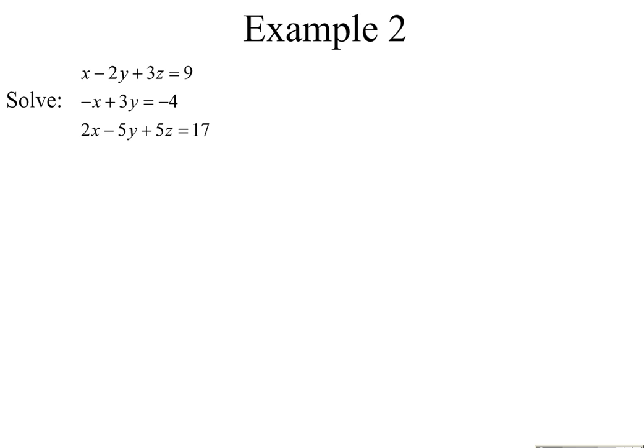Problem two. One of our three equations is already written in terms of only x and y. So what I need to do now is get a second equation in terms of only x and y. I'm going to take the top equation and the bottom equation, and combine them to eliminate z. To eliminate z's, I need to multiply the top equation by five. I'm going to get 5x minus 10y plus 15z equals 45.